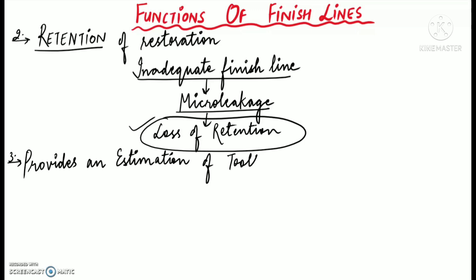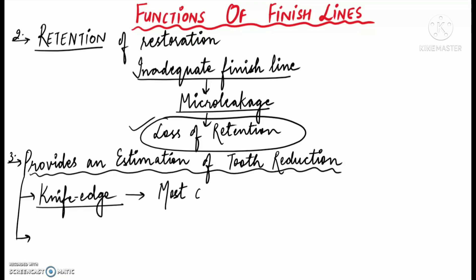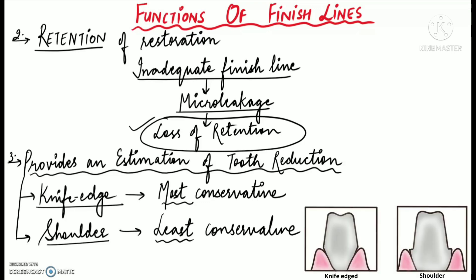Another function of finish line is that finish line design provides an estimation of the amount of tooth reduction. For example, knife edge finish line involves least tooth reduction and it is the most conservative. Why? Because of the least tooth reduction involved. And the shoulder finish line, as it involves considerable amount of tooth reduction, it is the least conservative. Therefore, the finish lines give an estimation of the amount of tooth reduced.